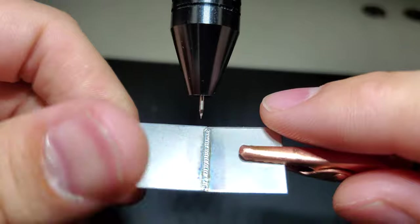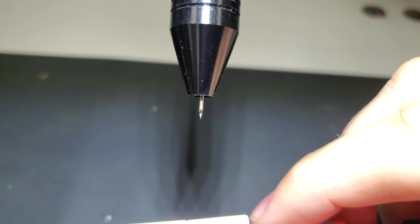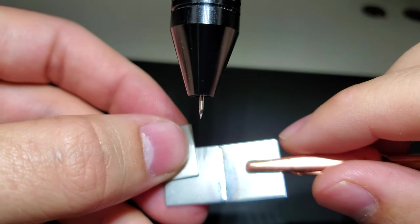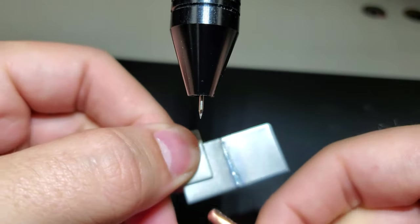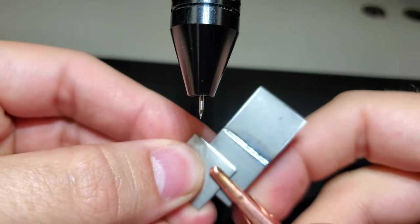So that is a butt weld. Right against each other. So the technique changes a little bit when we get to this point. I'm just going to use the grounding clip to pinch it on there so I don't have to deal with it.